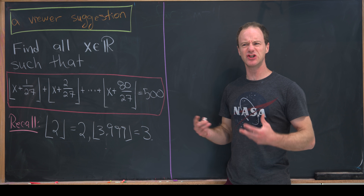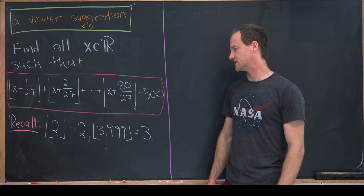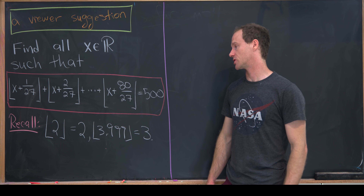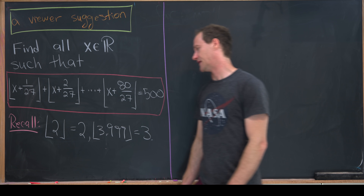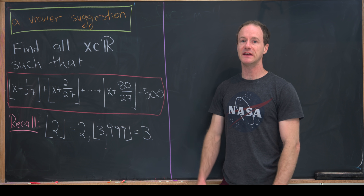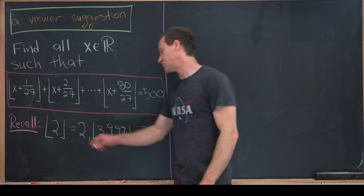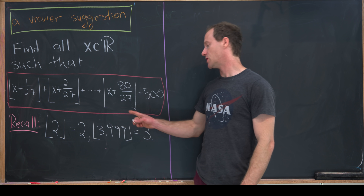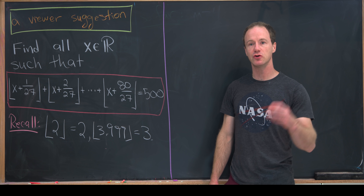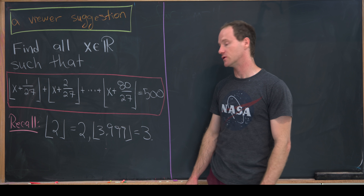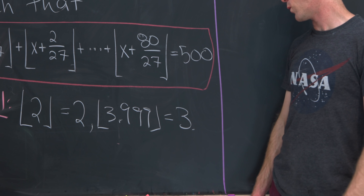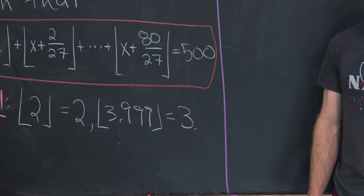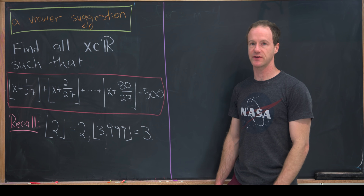Before we jump into this, let's recall what the floor function does. It's essentially like an elevator down to the first integer. So if you're already at an integer, you don't need to go down. So the floor of 2 is 2. But if you're anywhere below an integer, you go to the integer that is lower — even if you're very close to it. So the floor of 3.999 is 3, because we took the elevator down to 3.